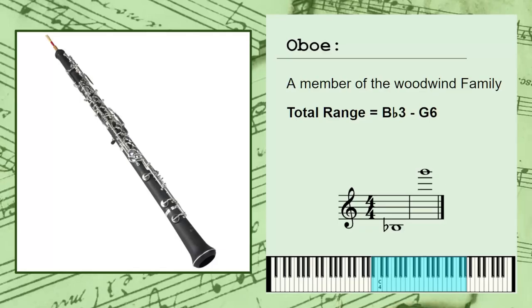Let's talk about the oboe. The oboe is a member of the woodwind section in the modern orchestra. It has a total range of Bb3 to G6 — the Bb just below middle C to the G above high C.